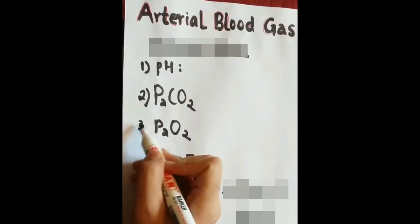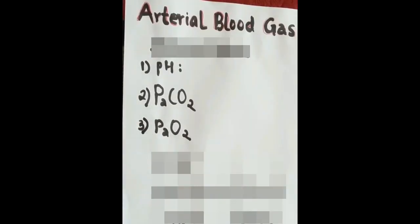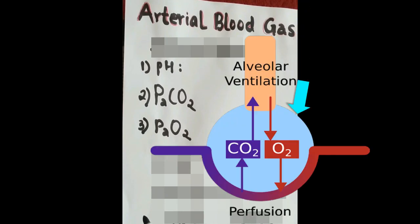Number 3 is PaO2, that is partial pressure of oxygen within arterial blood. It reflects how well oxygen is able to move from lungs to blood.